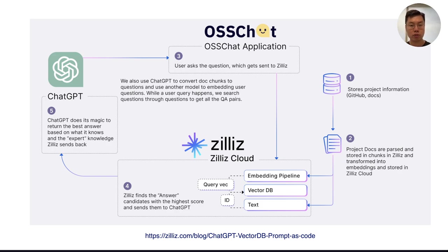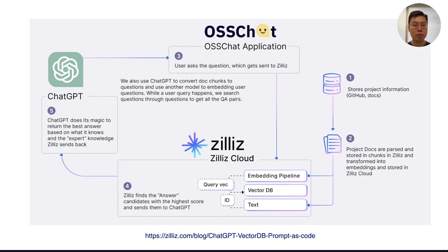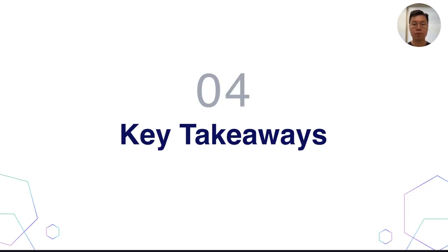OSSChat is available online at osschat.io. If you have open source projects you'd like to see on OSSChat, we'd be happy to take your suggestions. We're constantly adding new open source projects every week and will continue to maintain it. This is an implementation of the CVP framework we've created at Zilliz and an example of how you can use a vector database like Milvus to build out large language model applications.